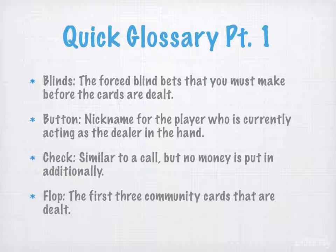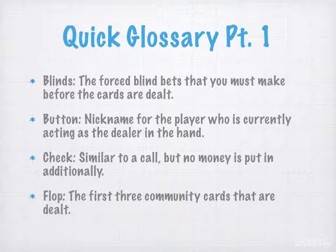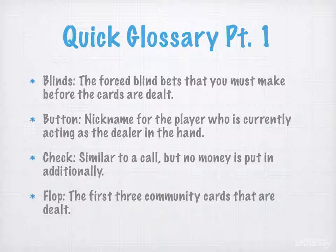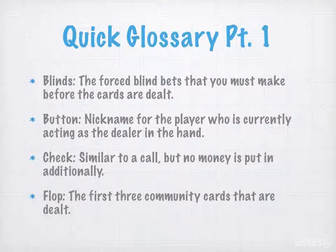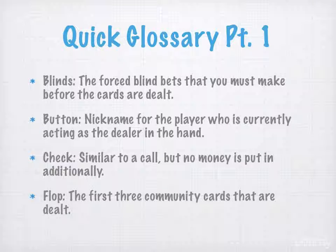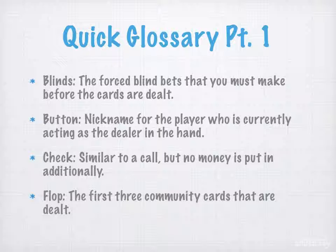Let me give you a quick glossary. Blinds are the forced blind bets that you must make before the cards are dealt. You have a small blind and a big blind. The small blind is usually the rake taken by the casino or the poker site. The big blind is usually the minimum amount that other players have to call in order to see the flop, but you're forced to put this money out before you get to see your hand. The button is basically the nickname for the player who is currently acting as the dealer.